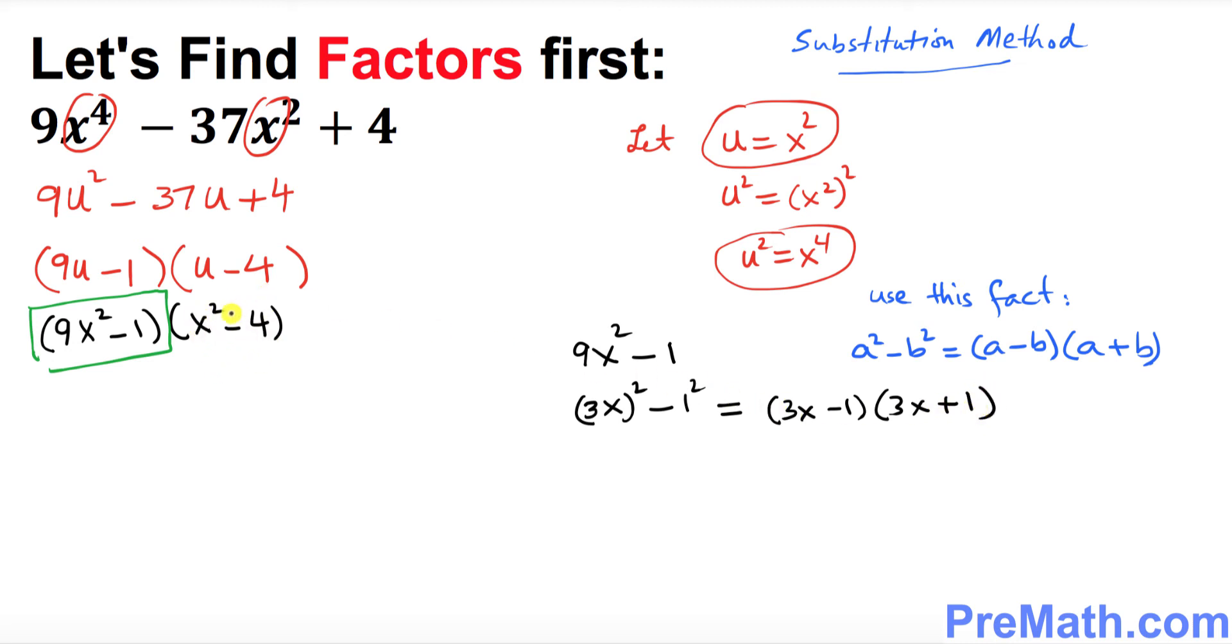Likewise, look at the second parenthesis, x square minus 4. That could be written as x square minus 2 square, and then we can write using this fact, we can write as x minus 2 times x plus 2.